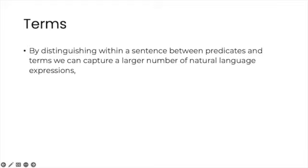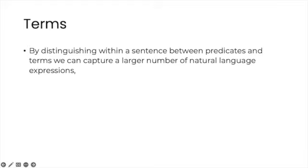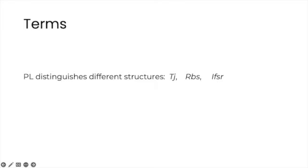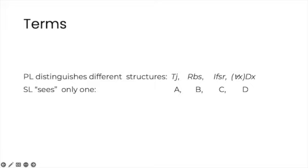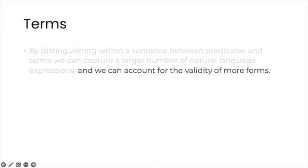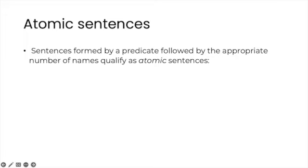By distinguishing within a sentence between predicates and terms, we can capture a larger number of natural language expressions than we could in sentential logic. Now we can account for the difference between atomic sentences involving monadic predicates and atomic sentences containing relations of different orders. SL, on the other hand, sees only one kind of sentence. Likewise, PL can distinguish between sentences that only have names and sentences that contain quantification, which as we'll see is also crucial for the validity of certain arguments. These distinctions allow us to account for the validity of more and more argument forms. In PL, sentences formed by a predicate, followed by the appropriate number of names, qualify as atomic sentences. Here are some examples.